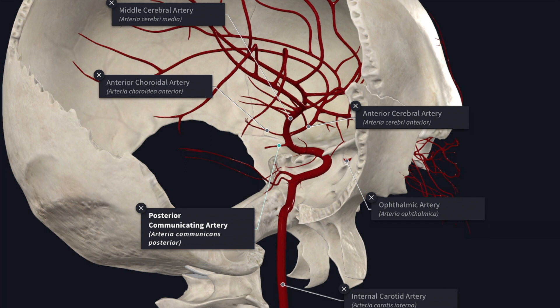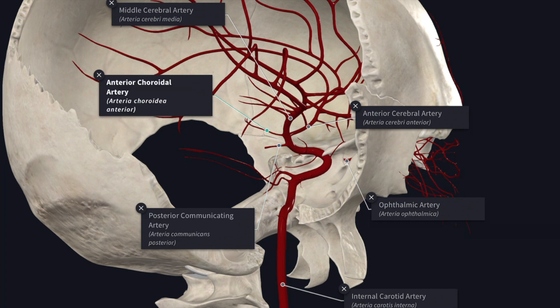The next branch is the anterior choroidal artery. The anterior choroidal artery is a long slender branch which arises just distal to the origin of the posterior communicating artery. It courses backward above and along the optic tract to enter the inferior horn of the lateral ventricle through the choroid fissure to end in the choroid plexus. Due to its long subarachnoid course and relatively small lumen, the anterior choroidal artery is more susceptible to thrombosis and is often referred to as the artery of cerebral thrombosis.